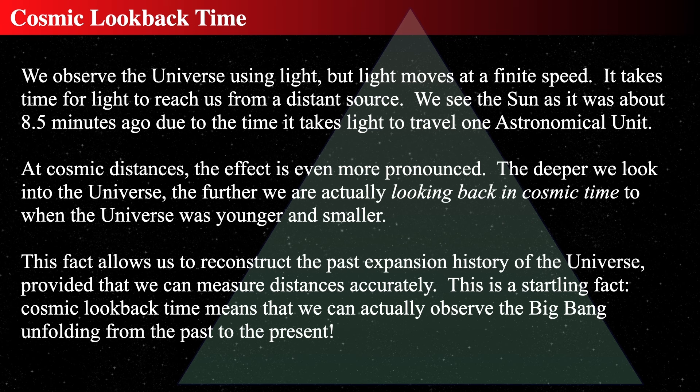When we think about cosmic look-back time, we say how far back in time we can see. We see the sun eight and a half minutes ago because that's how long it takes light to get here. But we're looking much further back when we look at cosmological distances — millions or billions of years in the past. We're not seeing things as they are; we're seeing them as they were.